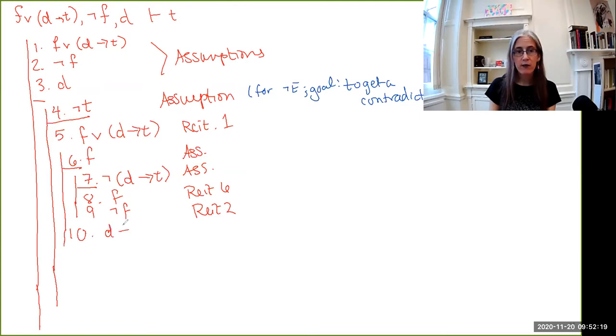So by negation elimination, I can get rid of that negation and just write down D implies T. So that is negation elimination, seven through nine. So now I've shown that from F, I can prove that D implies T.